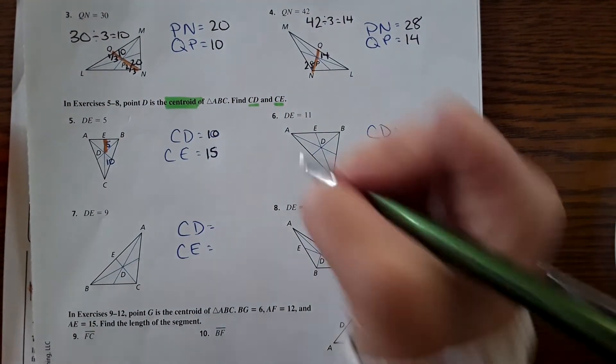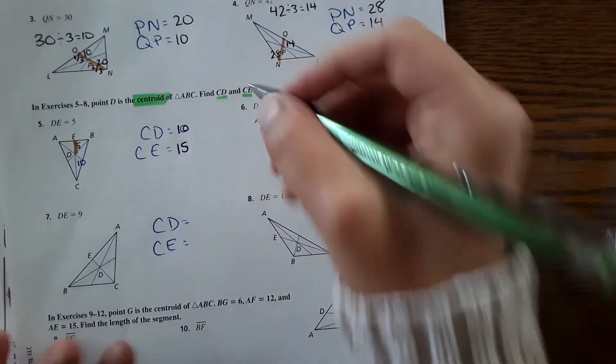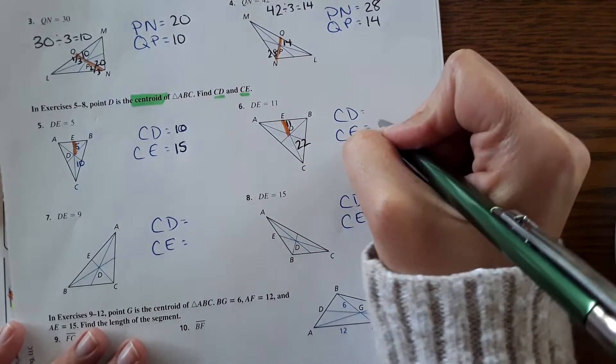Then DE right here, this is 11. CD would then be 22, and then the whole thing is 33.